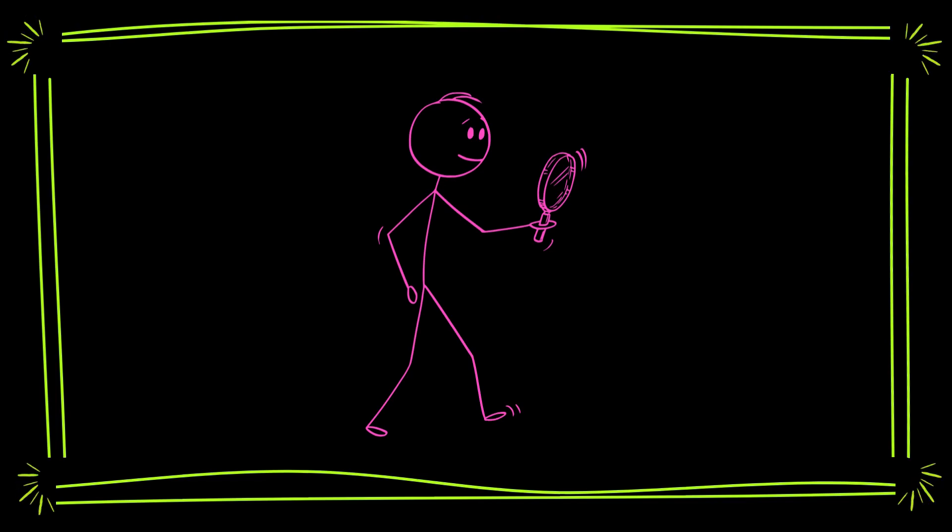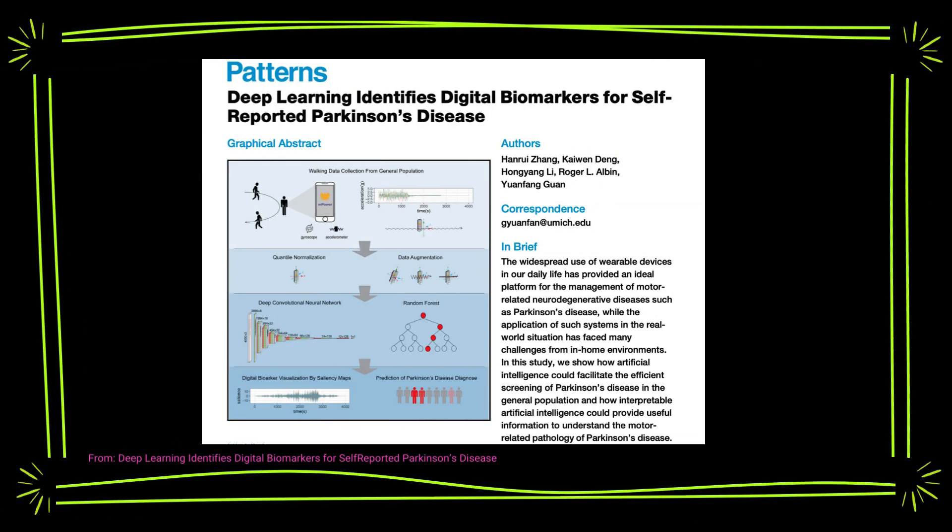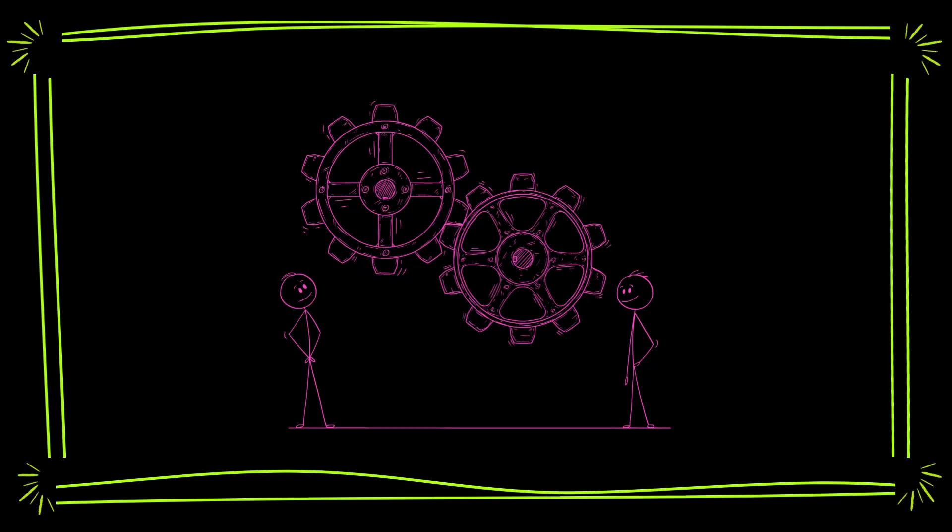researchers are exploring a more convenient and accessible method using smartphones. In a recent study, the researchers aimed to monitor Parkinson's disease remotely using smartphone motion sensors, which detect movement and rotation. They applied advanced machine learning techniques to analyze the data collected from these sensors.